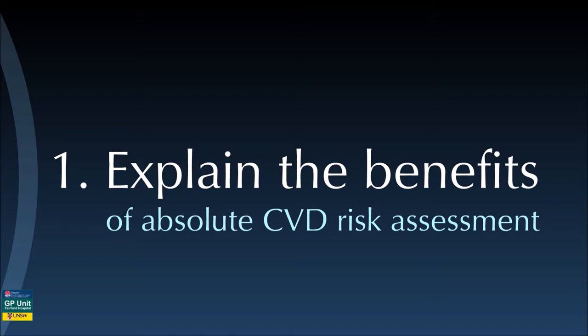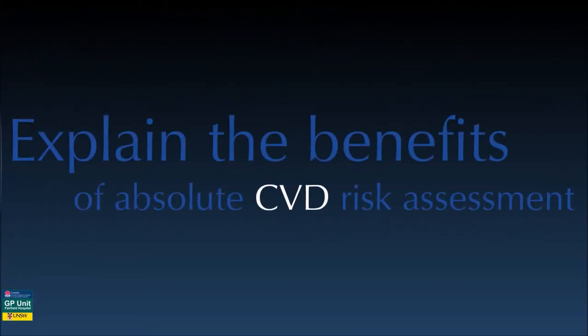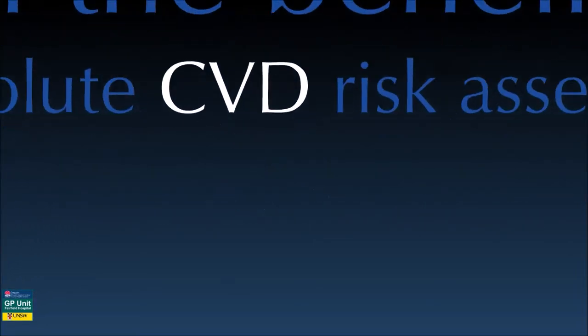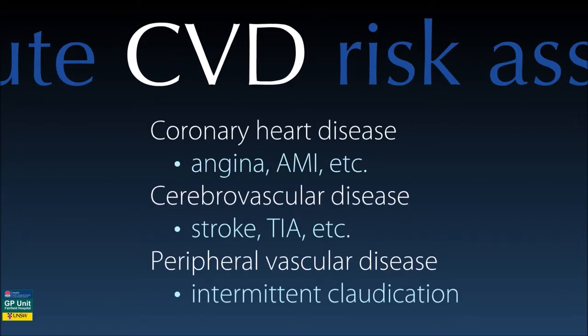To understand this learning outcome deeply, we need to deconstruct and look at several basic concepts. The term cardiovascular disease is used collectively in the literature to refer to three conditions: coronary heart disease, cerebrovascular disease, and peripheral vascular disease. You should know the common underlying pathological process, atherosclerosis, and this will not be covered again in this learning activity.